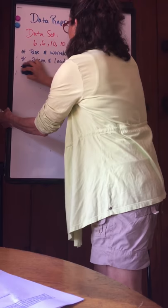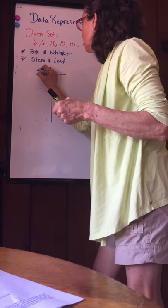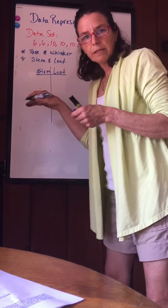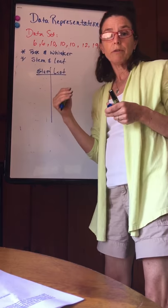Stem and leaf. Another great way to represent data. So here is my stem and here's my leaf. A great organizational tool. And stem and leaf will actually sometimes look like a histogram sideways. Although it will keep the integrity of the data, you'll still have the actual numbers there for you.